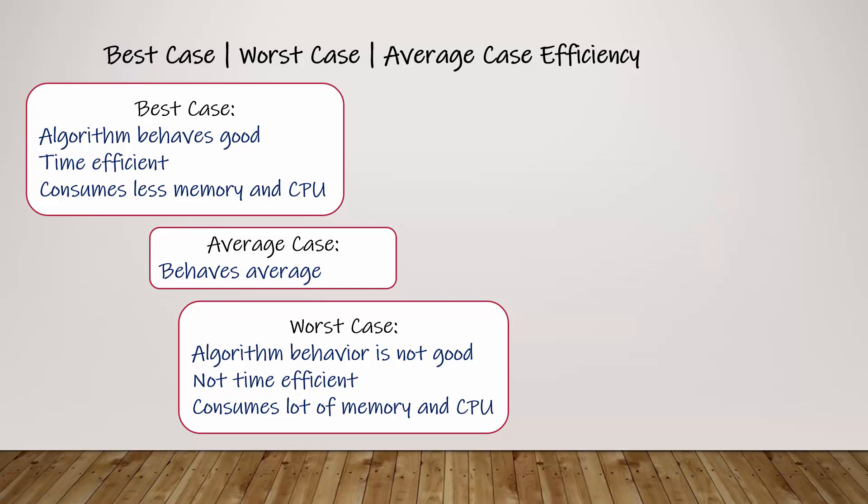For an example, when it's average case, your algorithm will consume average amount of time and it will consume average amount of memory and CPU. But how this happens? This depends on the data you are going to input into your algorithm.